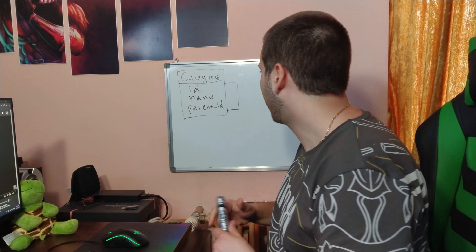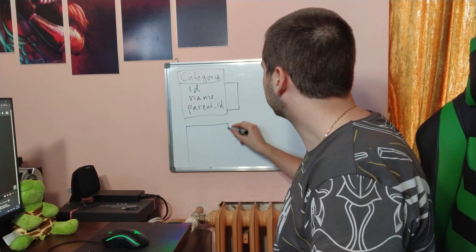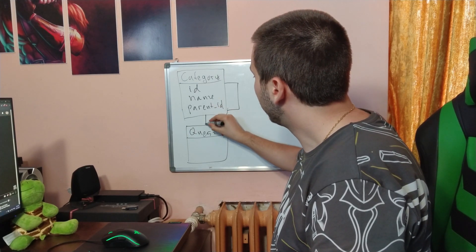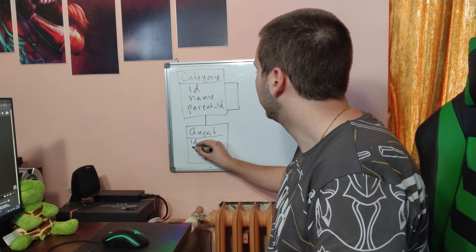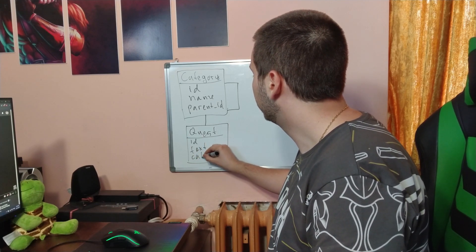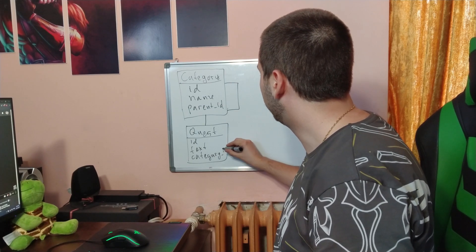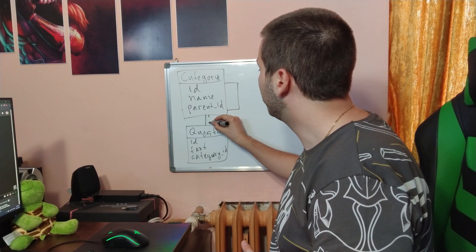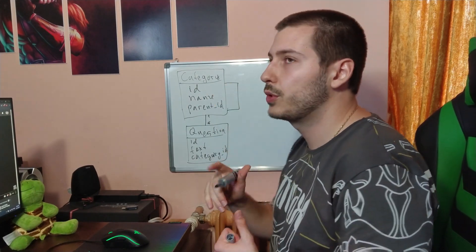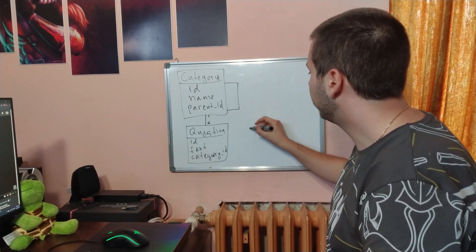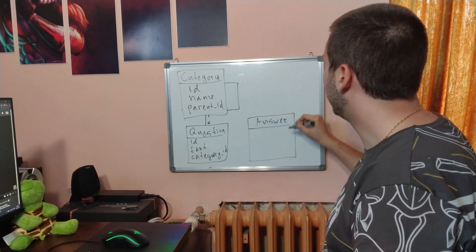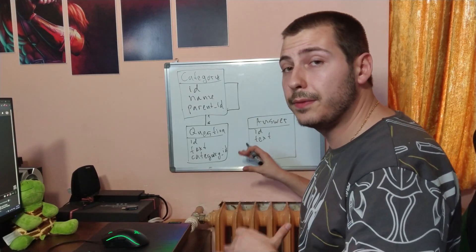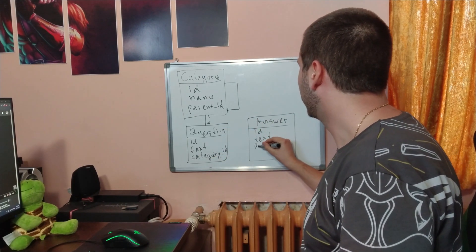The next table we need is a questions table. This table is going to have an ID, text, and a category ID. One category can have multiple questions, and one question can have only one category — meaning this is a one-to-many connection between the two tables. Every question must also have its proper answers. The answers table will have an ID, text, and a boolean field to check if an answer is true or false.